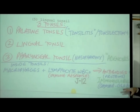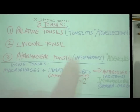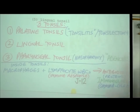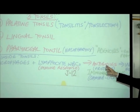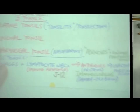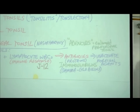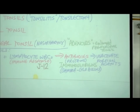If the palatine tonsils become enlarged while fighting bad guys, that's called tonsillitis. Removing them is a tonsillectomy. If the pharyngeal tonsil at the back of the nose became enlarged, that was called adenoids — an adenoids is the term for an enlarged pharyngeal tonsil. They used to remove palatine and pharyngeal tonsils together as a package deal, but never the lingual tonsil.